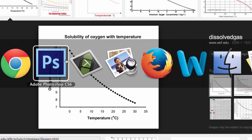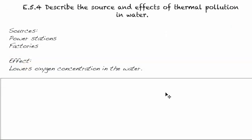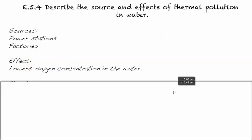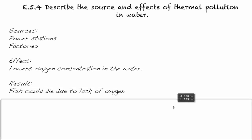So you can see that that might be a problem for any of the larger organisms that need a higher level of oxygen in order to survive. So the result could be that fish could die due to a lack of oxygen or what we would call asphyxiation.